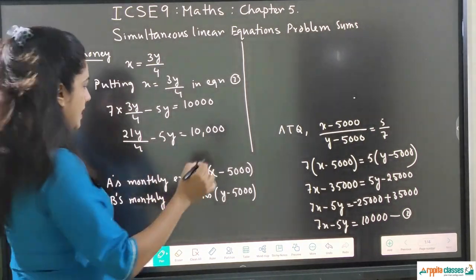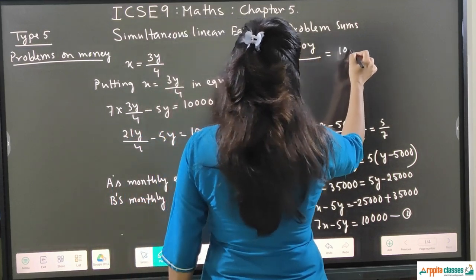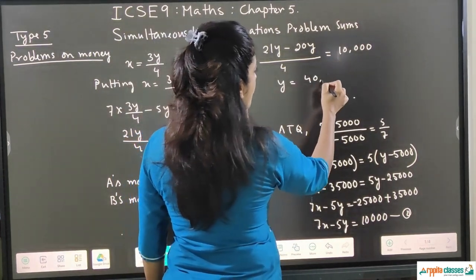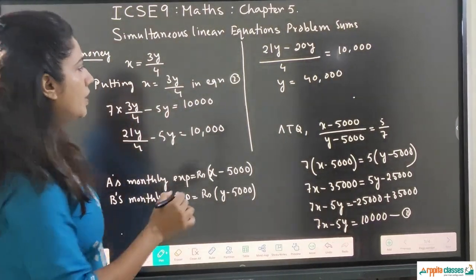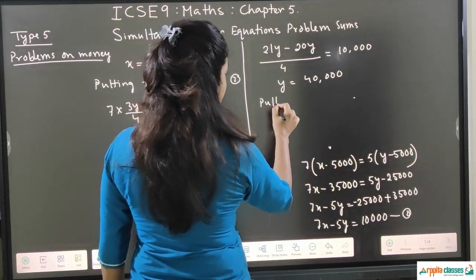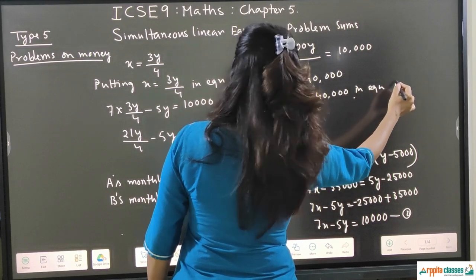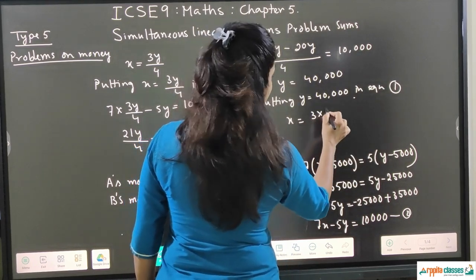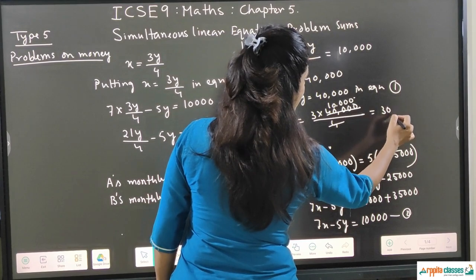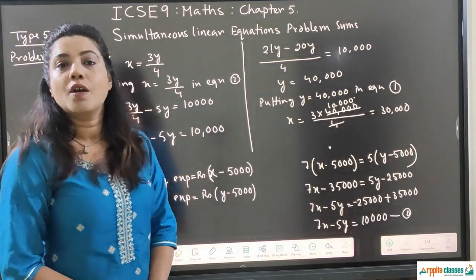Taking 4 as the LCM: 21Y minus 20Y equals 10,000 into 4, giving Y equals 40,000. Putting Y equals 40,000 into equation 1: X equals 3 into 40,000 divided by 4, so X equals 30,000. Therefore A's monthly income is rupees 30,000 and B's monthly income is rupees 40,000.